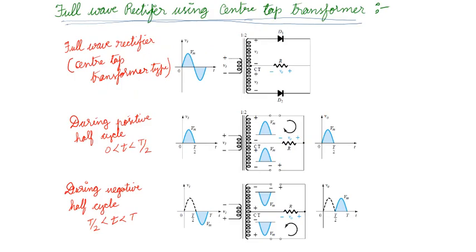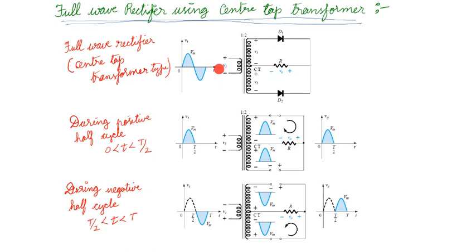Next, we take the full wave rectifier using a center-tap transformer. Why is it called a center-tap transformer? It has primary and secondary windings, with a connection at the center of the secondary — so there are three terminals on the secondary side. The turns ratio is 1-to-2. If I give VA at the input, it will be two times VA across the full secondary. Since I'm using a center-tap, from the top terminal to center is VA, and from the center to the bottom terminal is also VA.